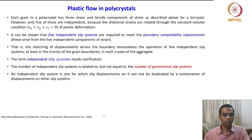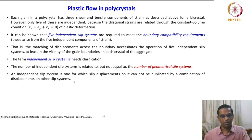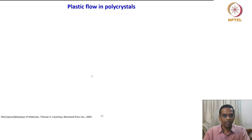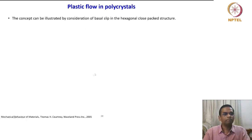An independent slip system is one for which slip displacements on it cannot be duplicated by a combination of displacements on other slip systems. The concept can be illustrated by considering basal slip in a hexagonal close-packed structure.